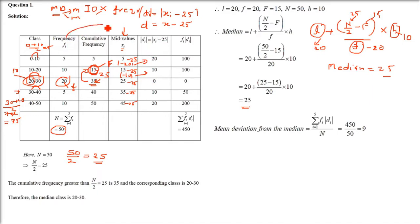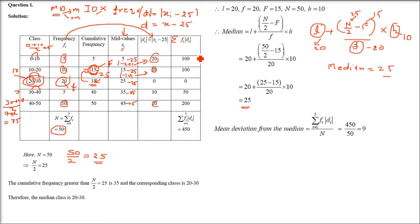Now multiply the frequency column (f) with the Di column to get fi×Di: 5×20=100, 10×10=100, 20×0=0, 5×10=50, 10×20=200. Adding all these gives Σ(fi×Di) = 450.